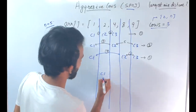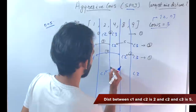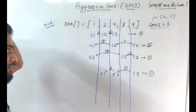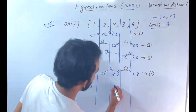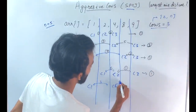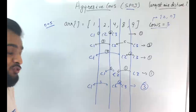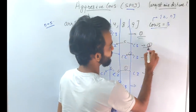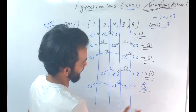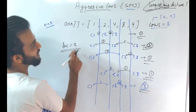I can try yet another configuration: cow 1 here, cow 2 here, cow 3 here. That gives differences of 6 and 1, so the minimal is 1. One more: cow 1 here, cow 2 here, cow 3 here — difference of 3 and 4, so the minimal is 3. You try every possible configuration of placing three cows, find all the minimals, and whichever minimal is the largest is your answer. Here, 3 is the largest, so 3 is your answer.